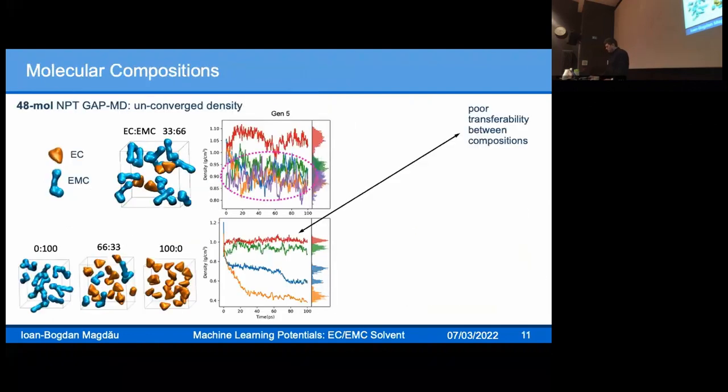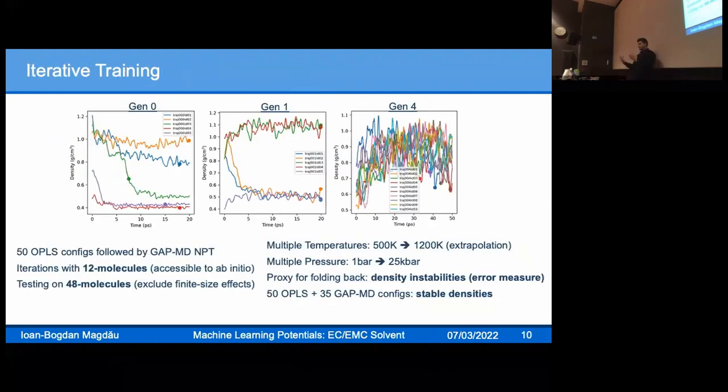Let me show you how we tackle this problem. First is iterative training. What do we achieve? We're trying to solve that self-consistency problem. We start with a pretty coarse model, run dynamics with it, let it explore the potential energy surface. It will almost always find regions of poor description. We try to identify those regions, compute ab initio properties, and fold them back into the training sets. We start with a very coarse model from just 50 OPLS configs. Generation zero, most trajectories fail within 20 picoseconds. We pick configurations that failed, fold them back in and repeat.